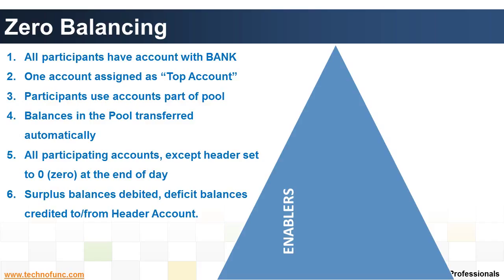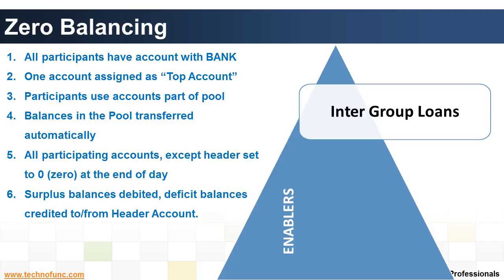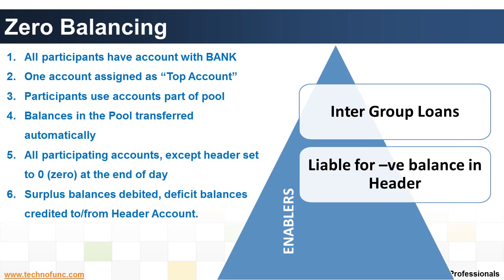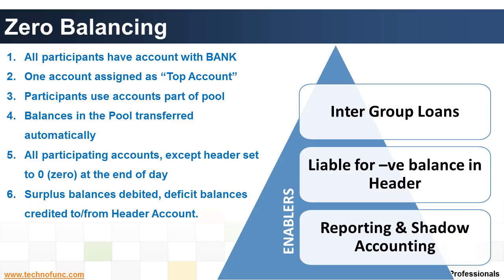Fund transfer transactions under zero balancing may be called sweeping and topping. Transfers and drawdowns of funds to and from the master account by the participating companies have the nature of the grant and repayment of intra-group loans. In general, all entities participating in the cash pooling arrangement will be liable for any negative balance on the master account irrespective of the amount they have contributed. Reporting or shadow accounting in respect of zero balancing transactions is usually available to track the transferred amounts.